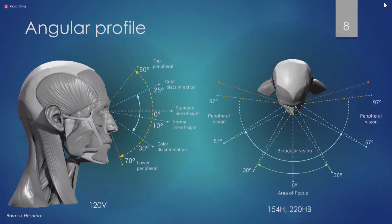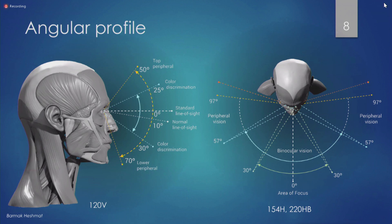In terms of angular profile, we have about 120 degrees vertical field of view and 154 degrees horizontal field of view per eye. Overall, on the higher end of the spectrum, I've seen 220 degrees horizontal field of view for both eyes combined. Interestingly, the binocular vision overlap — where both eyes' fields of view overlap — varies significantly by race. For example, if you have a flatter nose, you can have up to 30 to 40 degrees larger binocular field of view. These are challenges that AR optic and headset designers should consider.